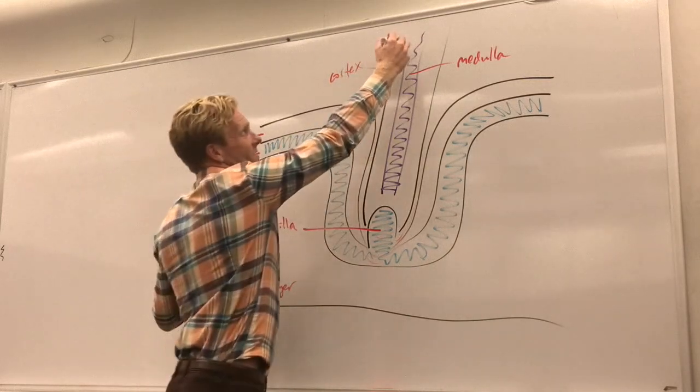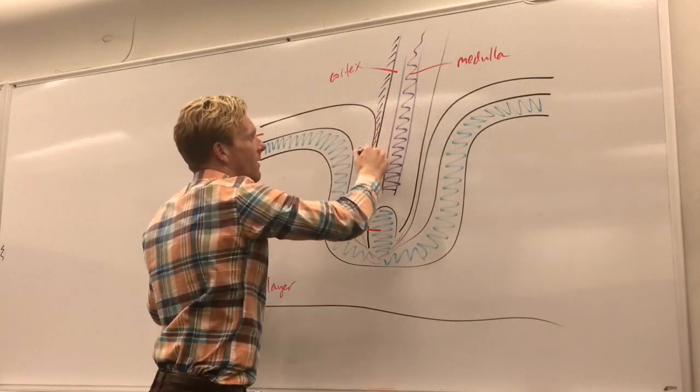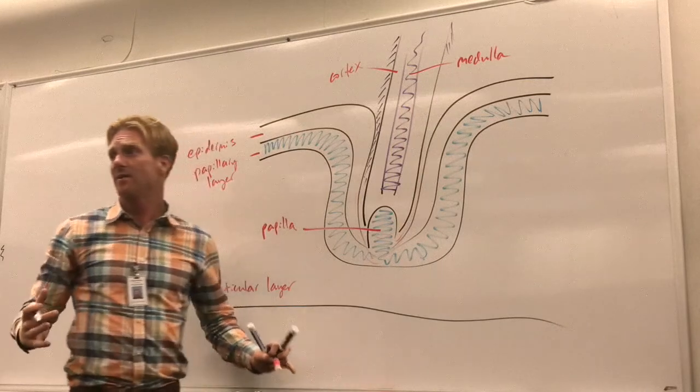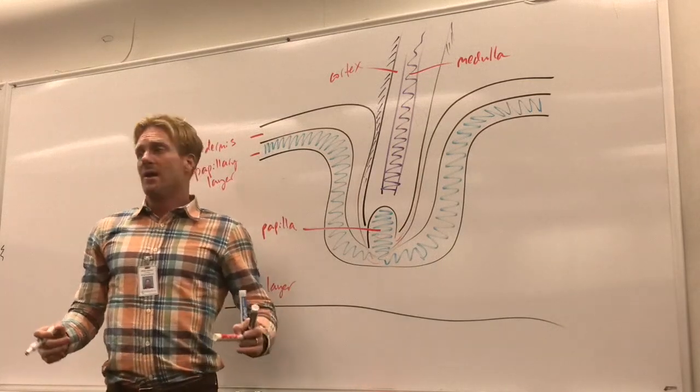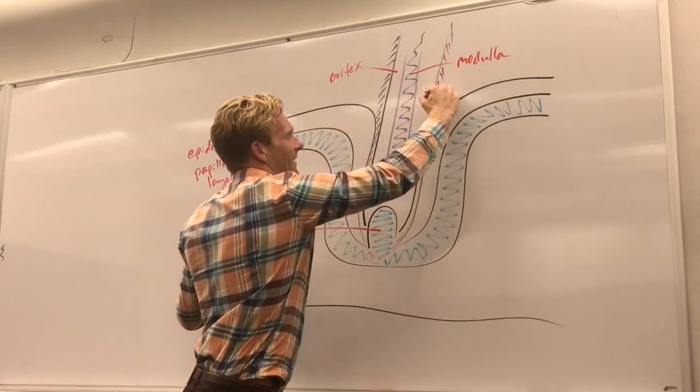The medulla is flanked by the cortex of the hair strand. And on the outside of the hair strand we actually have a third component or layer—this is called cuticle. And this consists of shingle-like cells that wrap around the hair strand and really prevent it from tangling with nearby hair strands.